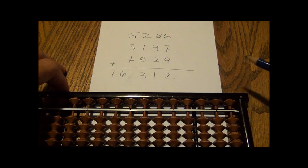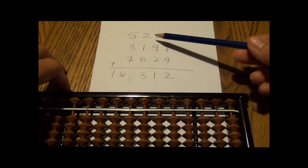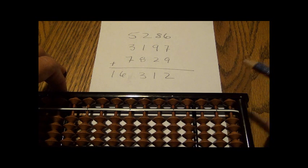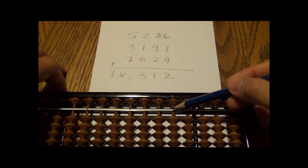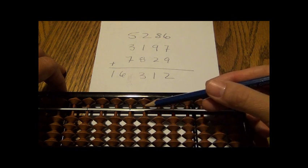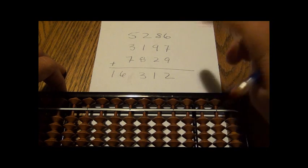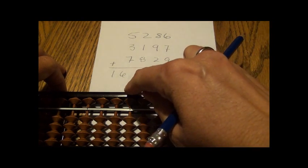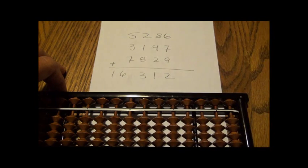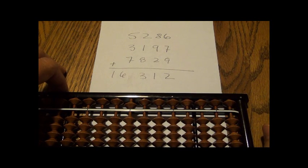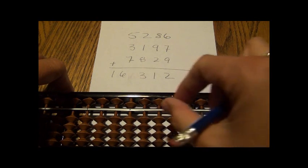So the first thing I'm going to do is I'm going to put down this number 5,286. So if this is the ones digit, this is tens, hundreds, and thousands. Remember, five is done with the upper bead, the heavenly bead like that. So that's 5,000.